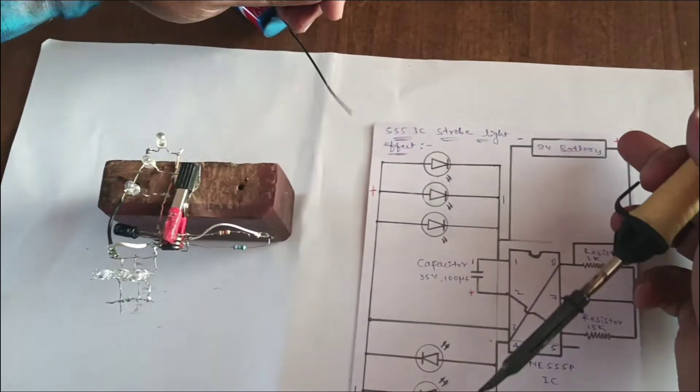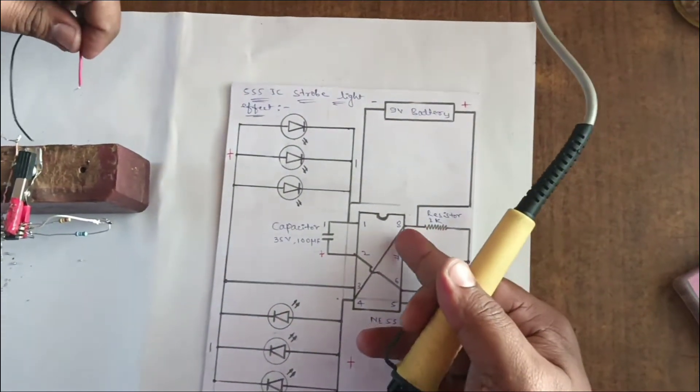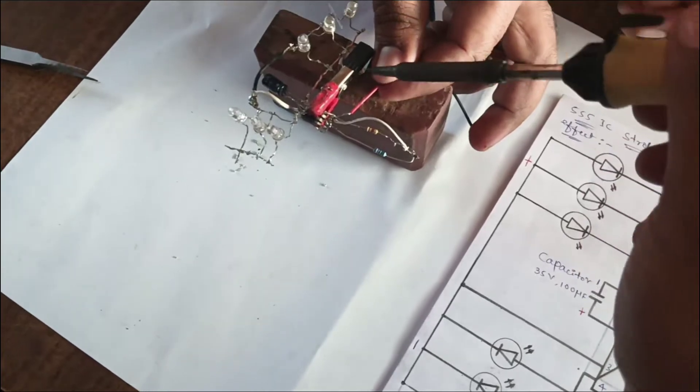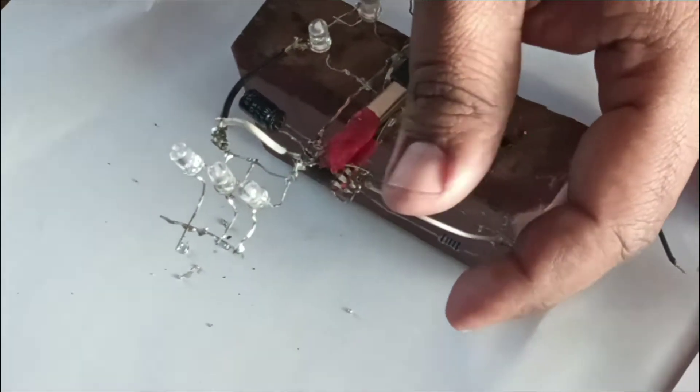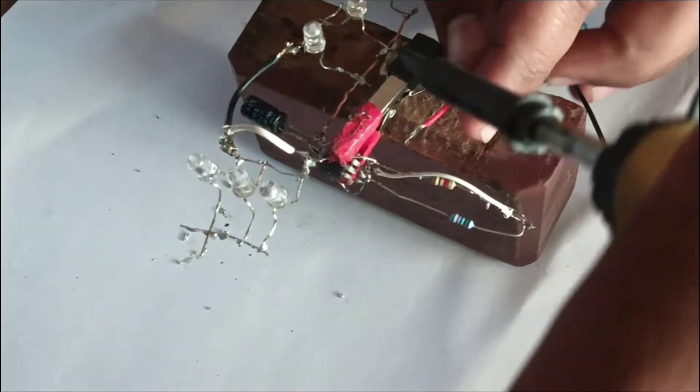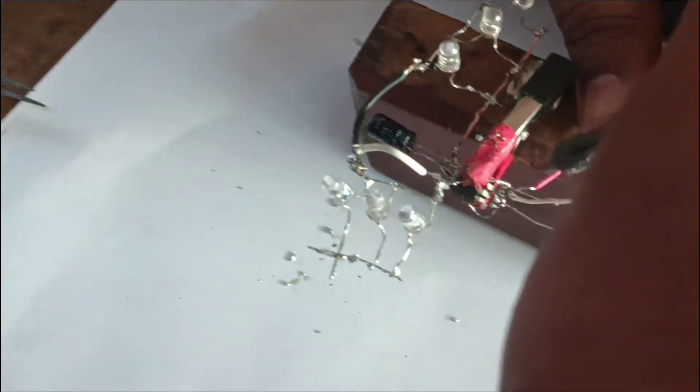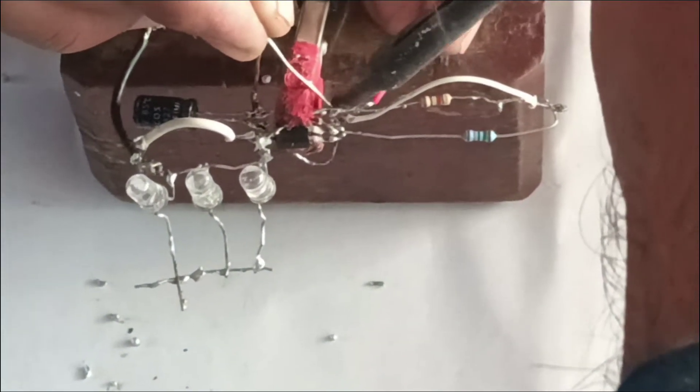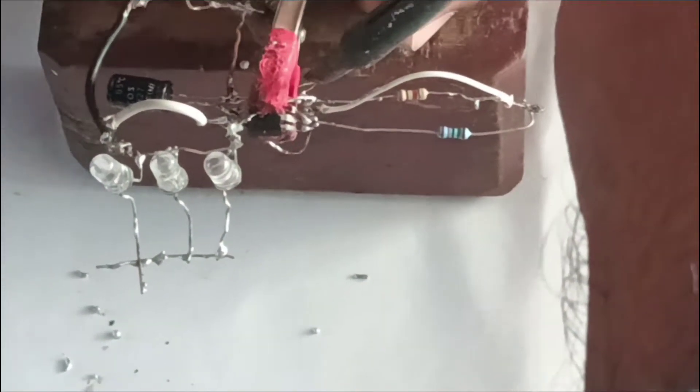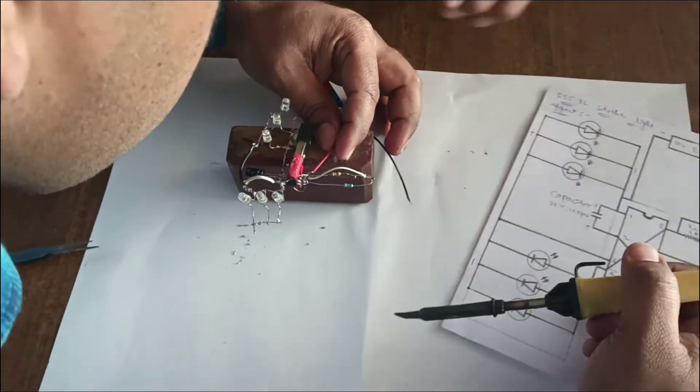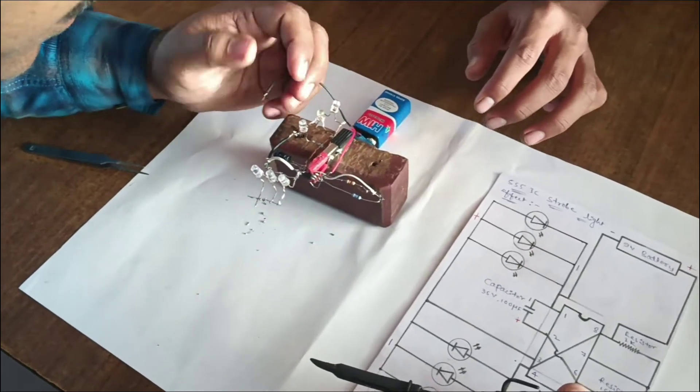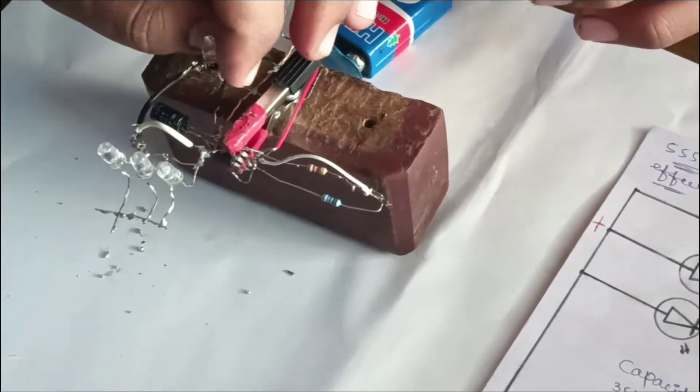Connect the battery positive to pin number 8. The negative terminal connects to the capacitor negative.